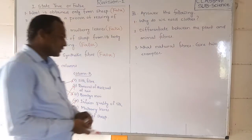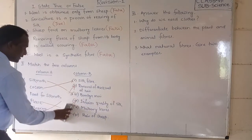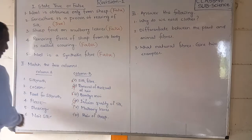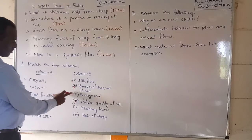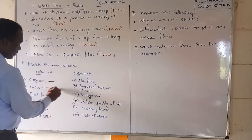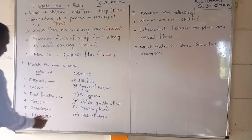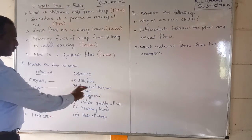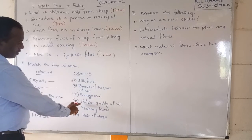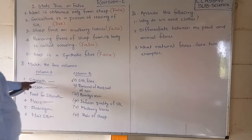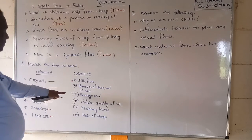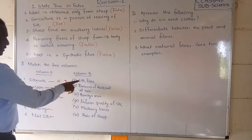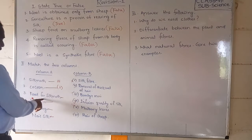These are the answers for the match-the-column section. We can also write the answers in a different format — by numbering or lettering. For example: silk moth — Bombyx mori; cocoon — silk fiber; food for silk moth — mulberry leaves. These match correctly as we discussed.